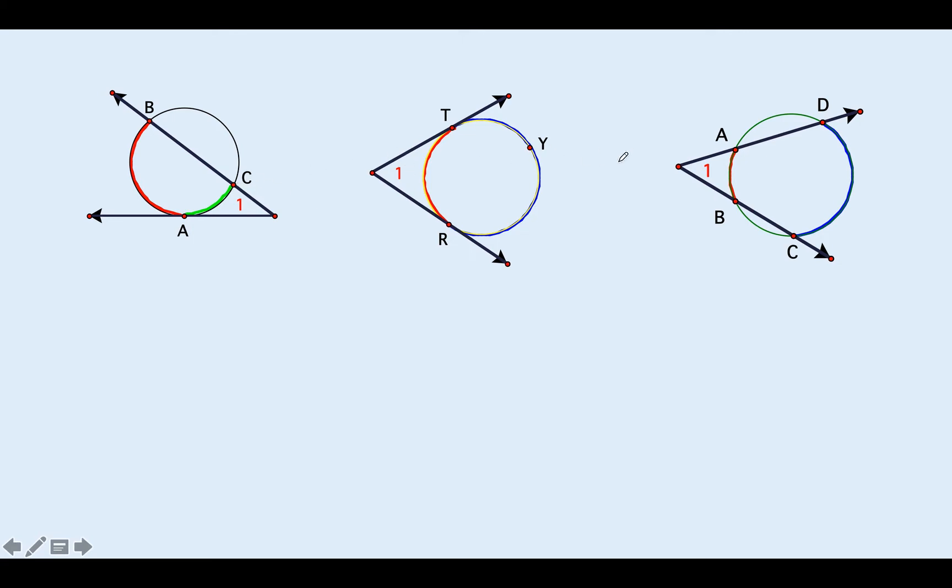Here are the three cases where you can have angles that happen outside of a circle created by different geometric shapes. This is a tangent and a secant. This is two tangents. These are two secants. One thing they have in common that I want you to notice is as the angle opens up, there are two arcs inside the angle - a smaller arc and a larger arc.